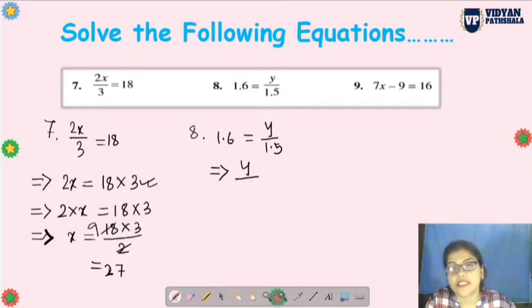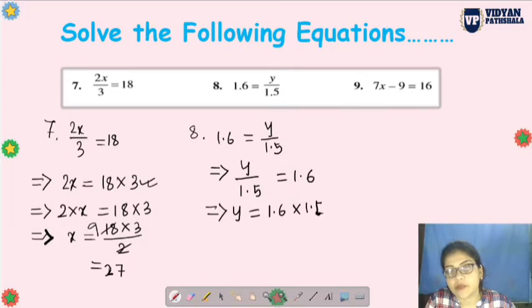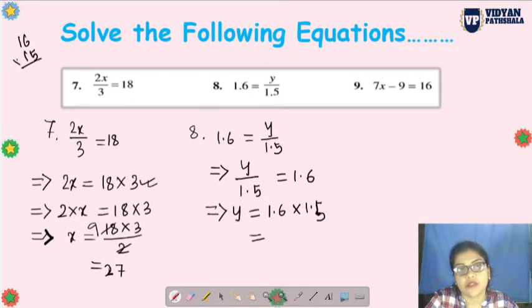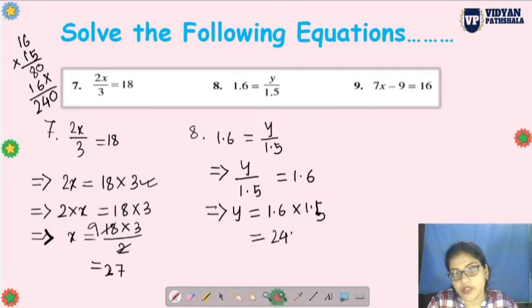The next question is: we can write y/1.5 equals 1.6, so y equals 1.6 times 1.5. If you multiply, how much will it be? 16 and 15 multiply and see: 6 fives are 30, zero, and then 3, 5 ones are 5 and 3 is 8, into 16. So you have 240. This is 240 and the point here - here will be 1 house and here will be 2 houses, so 2.4.